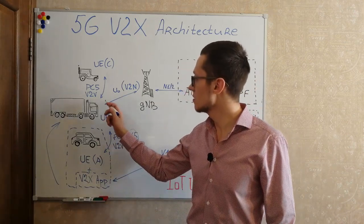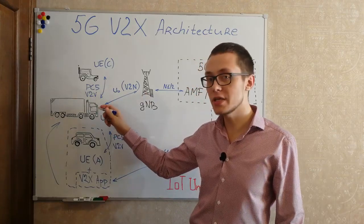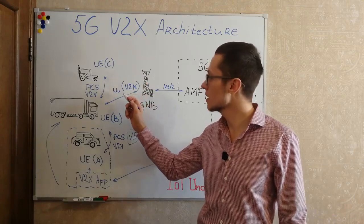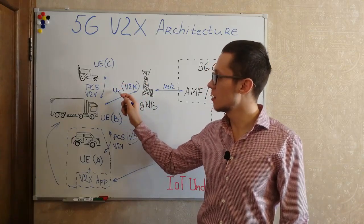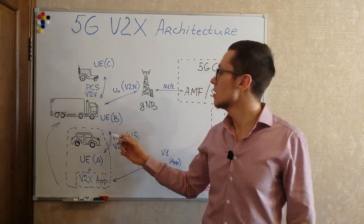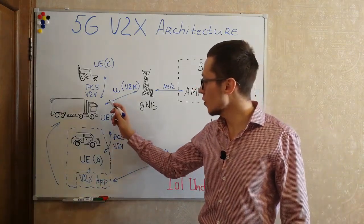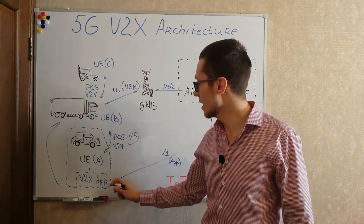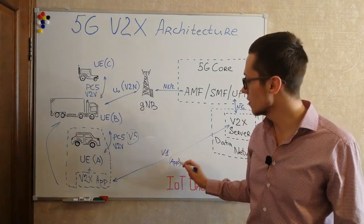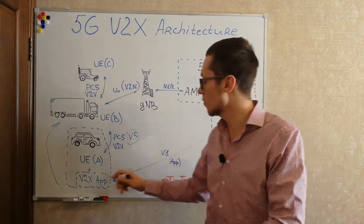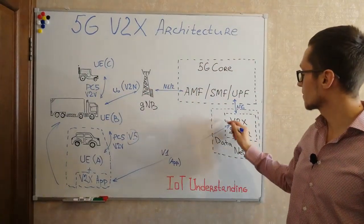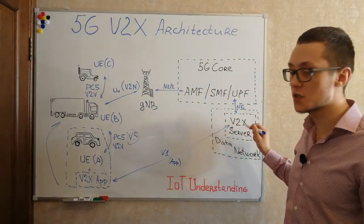If car can communicate with network such case as vehicle-to-network and this communication is via standard radio interface UE and of course, this communication can be done via V1 interface. It is still application interface just for communicating V2X application and V2X server.